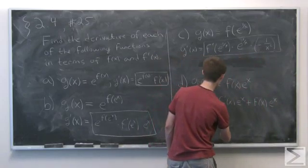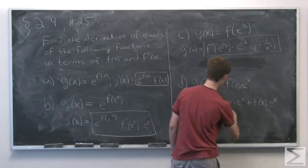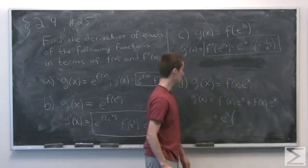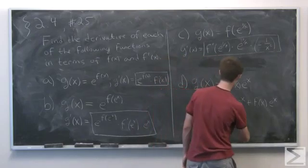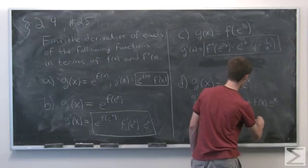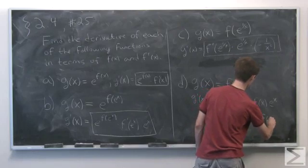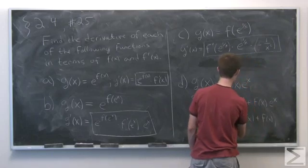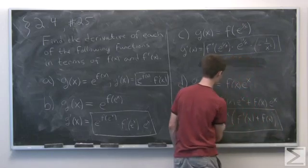Now we can simplify this a little bit by factoring out e to the x. And that leaves us with f prime of x plus f of x.